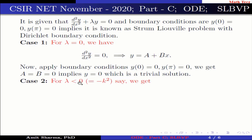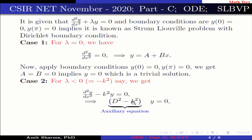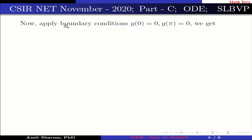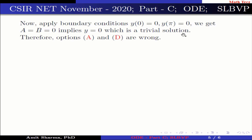Case 2: For λ < 0, say λ = −k², we get d²y/dx² − k²y = 0, giving auxiliary equation with roots ±k. The general solution is y = ae^(kx) + be^(−kx). Applying boundary conditions y(0) = 0 and y(π) = 0, we get a = b = 0, so y = 0, which is again a trivial solution. Therefore options (a) and (d) are wrong.